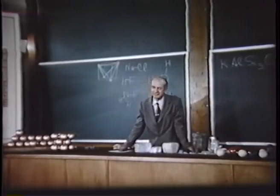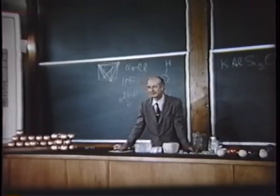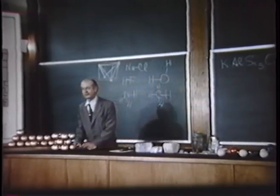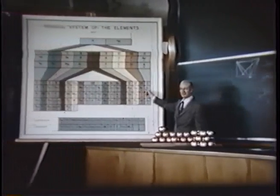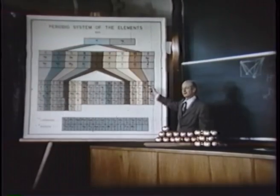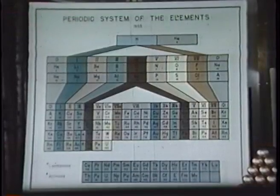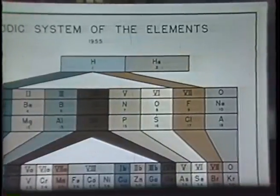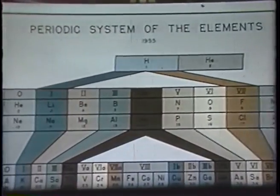In order to understand these more precise concepts of valence, we have to know something about the electronic structure of atoms. Let us start with a discussion of ionic valence. Here we have the periodic system of the elements. The elements are ranged in order of their atomic numbers. Hydrogen, the simplest atom, consists of a nucleus with electric charge plus one, and a single electron outside of the nucleus. Helium has two electrons outside of a nucleus with charge plus two. Lithium has three electrons outside of a nucleus with charge plus three, and so on.